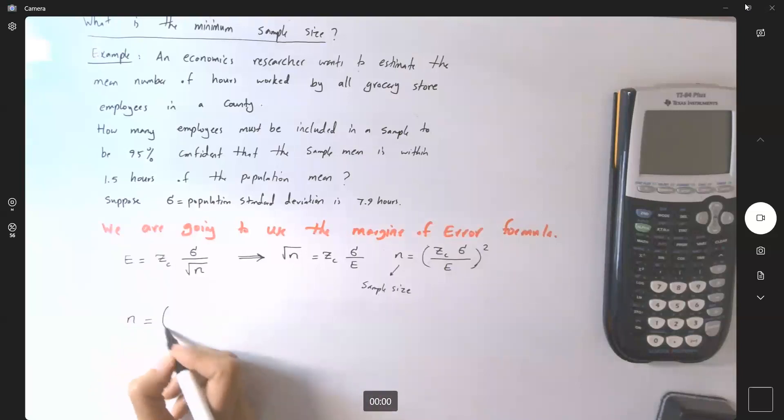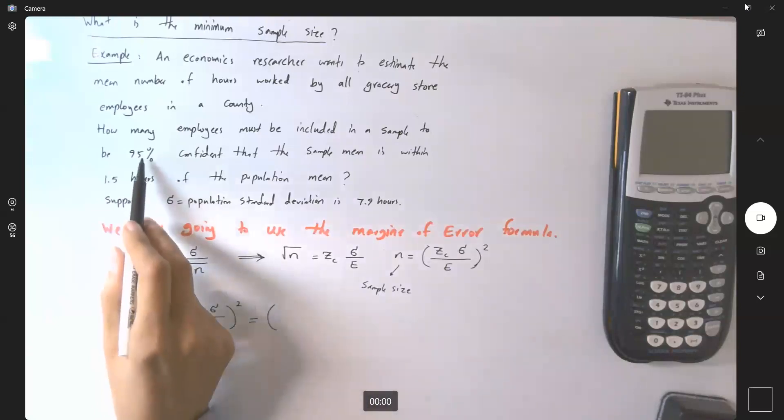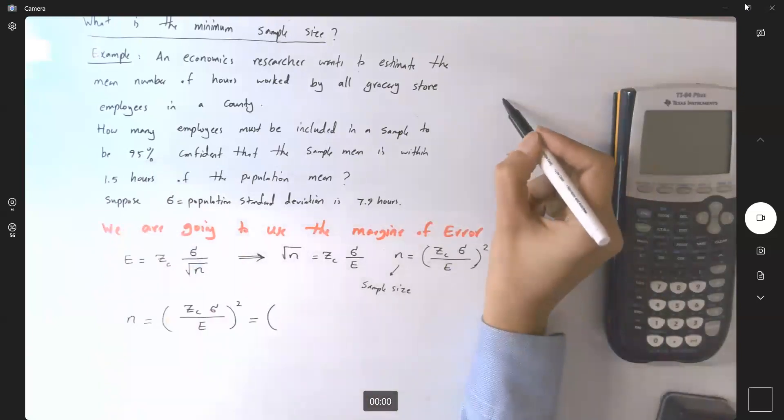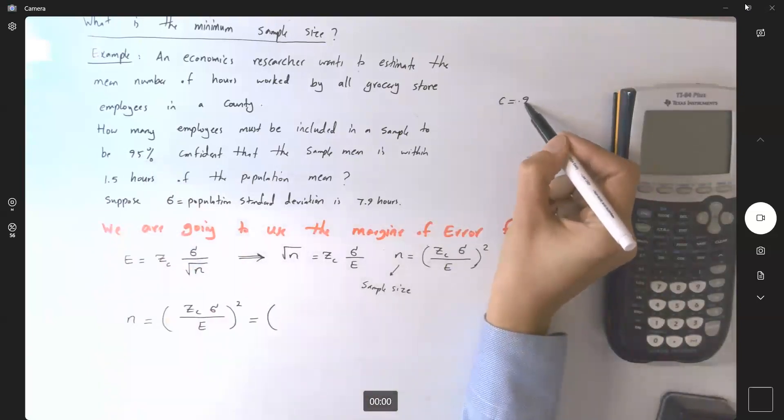So since n is equal to zc sigma divided by e to the second power, we have all of these pieces of information. zc is critical value for 95% confidence level. So if c is 0.95